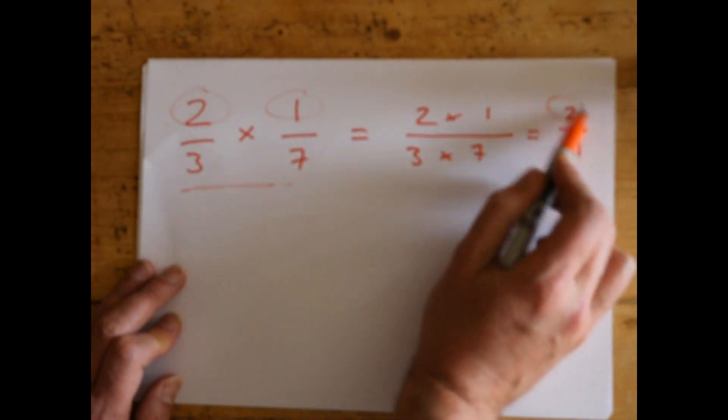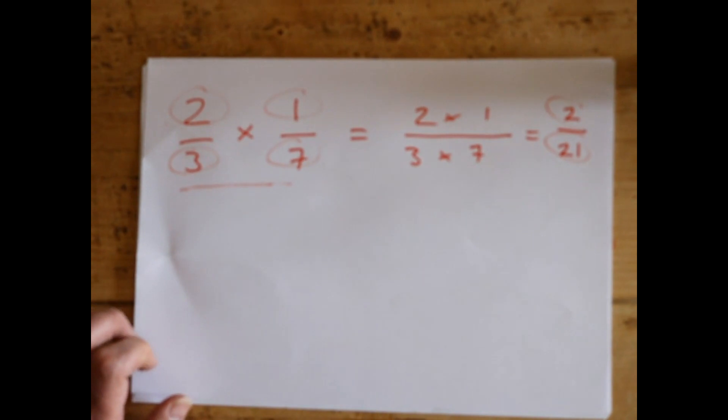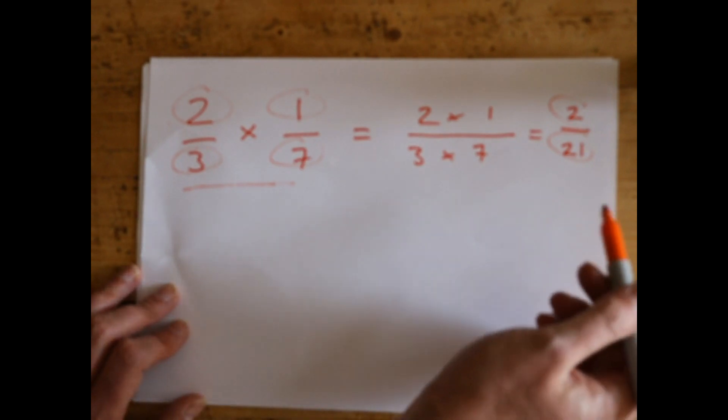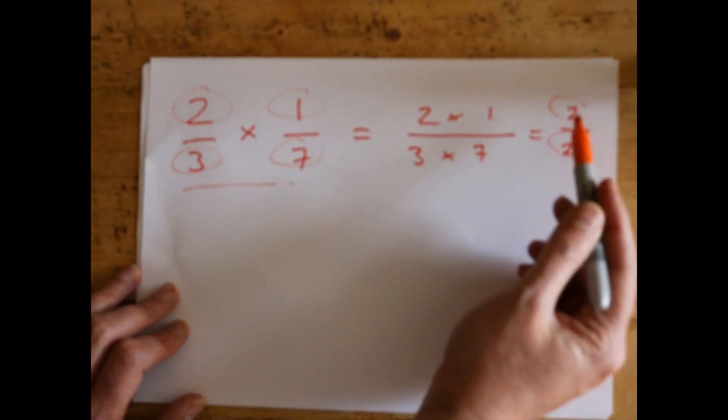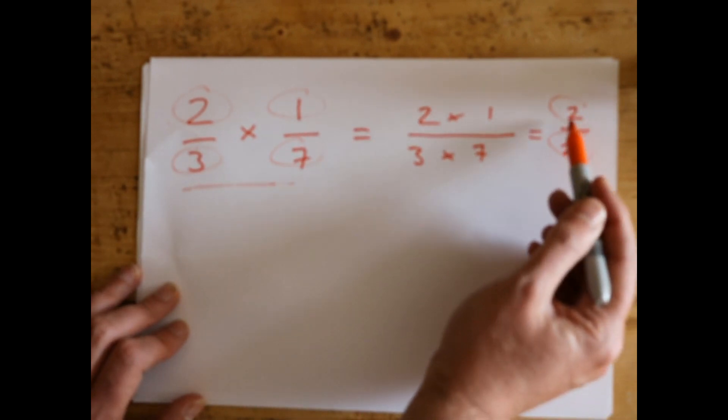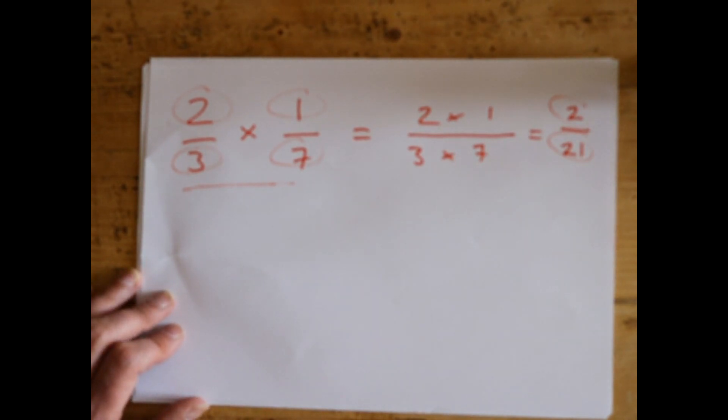Now the only thing you have to watch out for is simplifying, because these can get to be quite big numbers. Check out our video on how to simplify fractions. But just as a small recap, you try dividing both top and bottom by two, then by three, then by four. Two is a prime number, so you can't get any lower for this one.